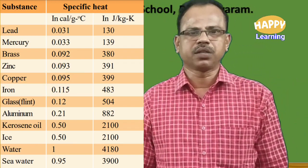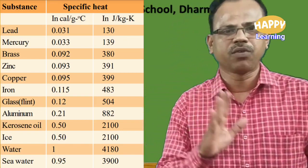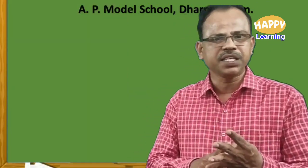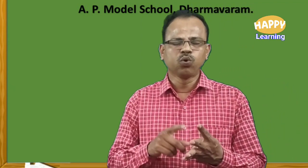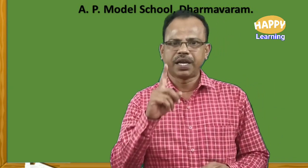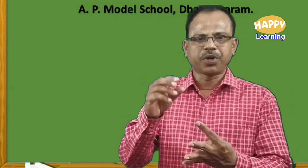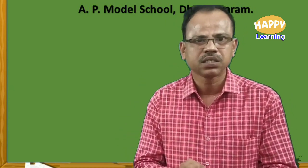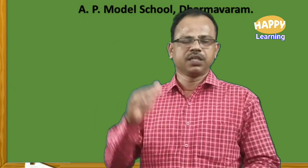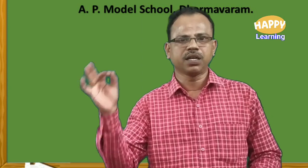Let us discuss in CGS units. Specific heat of copper is 0.1. That means you need 0.1 calories of heat energy to raise the temperature of 1 gram of copper by 1 degree Celsius. Take 1 gram of copper and raise its temperature by 1 degree Celsius — the heat energy required for this purpose is 0.1 calories. That is the meaning of specific heat of copper equal to 0.1 calories per gram per degree Celsius.